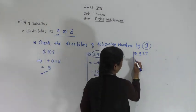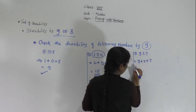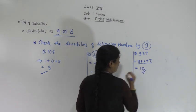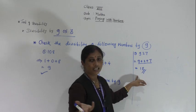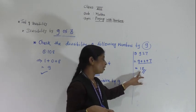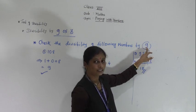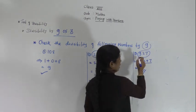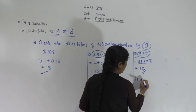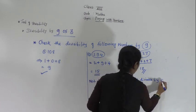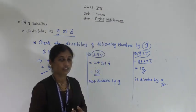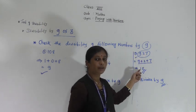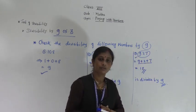For 927: 9 + 2 + 7. 9 + 2 = 11, 11 + 7 = 18. Is 18 a multiple of 9? Yes — 9 twos are 18. So the whole number 927 is also divisible by 9 because the sum of all its digits is divisible by 9.